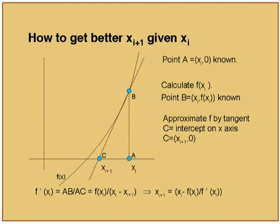He writes down the formula: F'(x_i) equals AB over AC, which is F(x_i) divided by (x_i − x_{i+1}), and that gives the next point x_{i+1}. So this is nothing but x_{i+1} = x_i − F(x_i) / F'(x_i). Simple principle, well known.